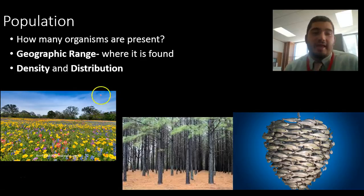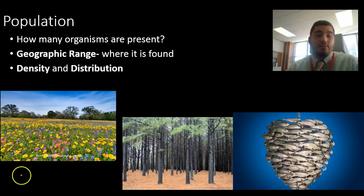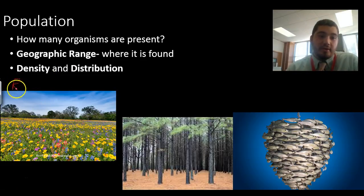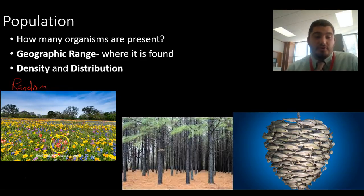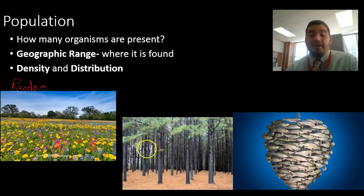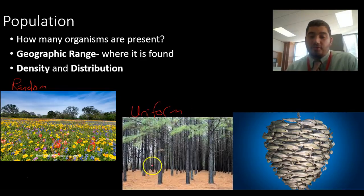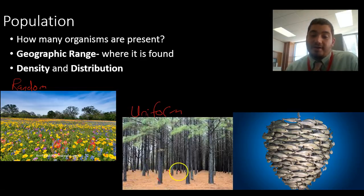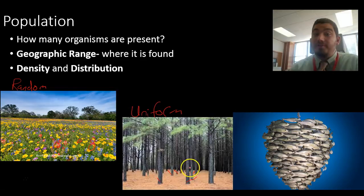This is different than population distribution, which is how these organisms are distributed throughout an environment, throughout an ecosystem. We could have several types of distributions. The first one is called random — so these wildflowers in this field are a random distribution. We have some reds, some yellows, some blues, some purples, and they're just randomly dispersed. We could have a uniform distribution, just like this planted pine forest, where everything's nice and even, pretty spread out in a consistent pattern — whether it's pine trees that were planted, or organisms that line up like in March of the Penguins.